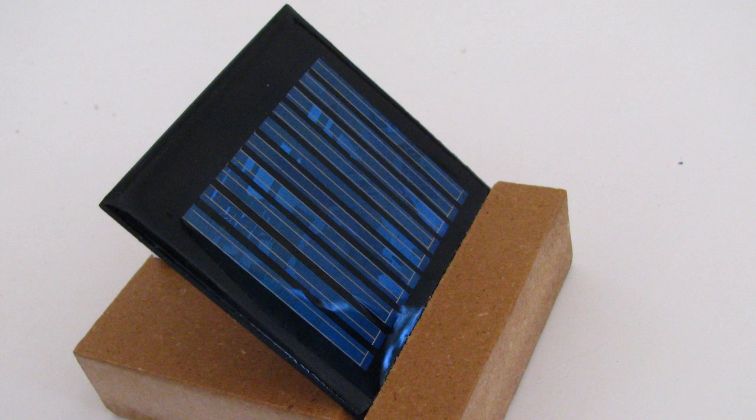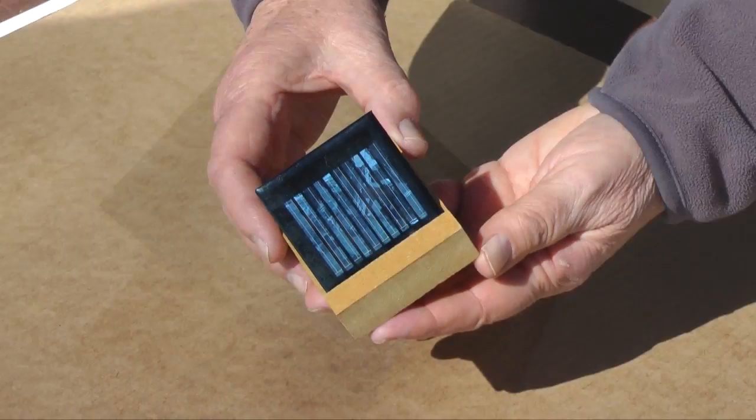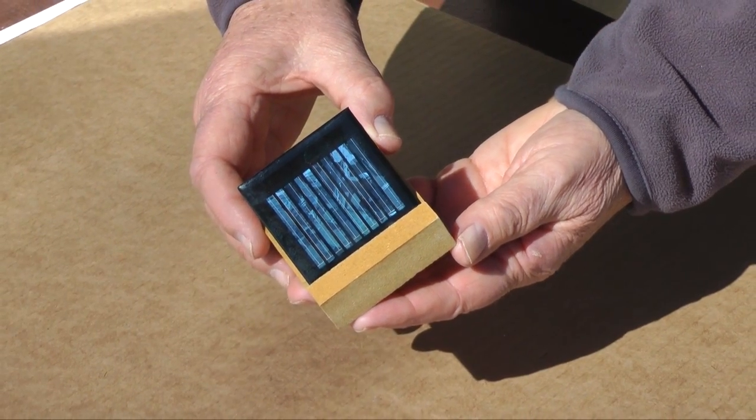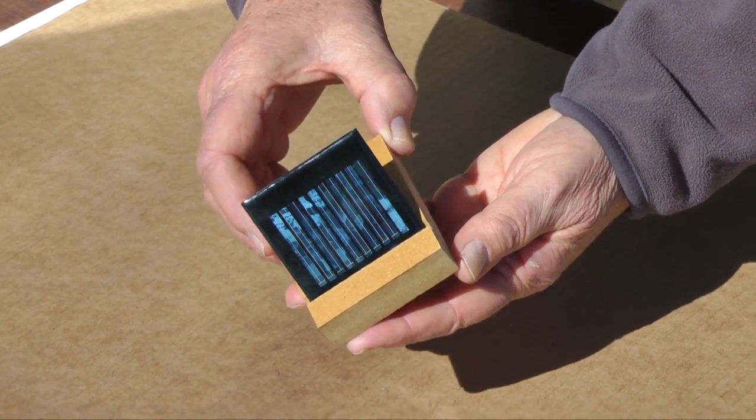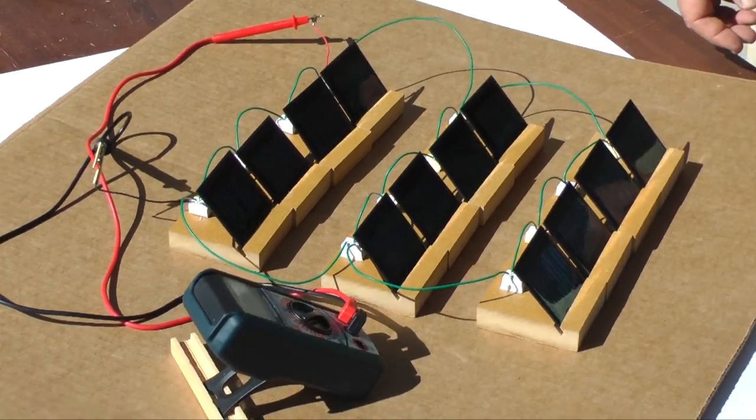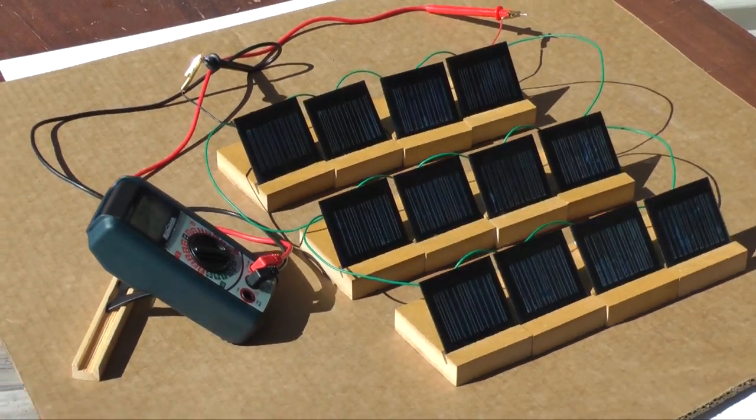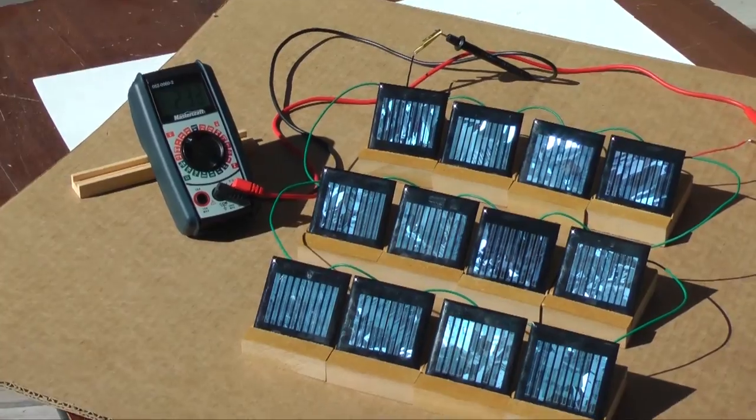These six volt modules measure four by five centimeters and produce less than one eighth of a watt of power. But with these small modules it is possible to construct working models of solar arrays and experiment with different configurations.